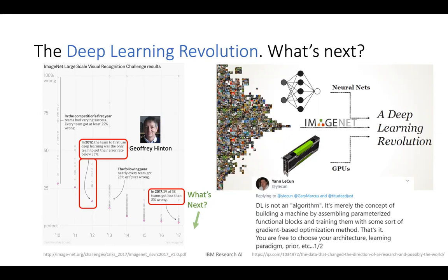AI pioneers like Yann LeCun now describe deep learning as a system rather than just an algorithm. He says deep learning is the concept of building a machine by assembling parameterized function blocks and training them with gradient-based optimization methods. You are free to choose your architecture and learning paradigms. We are basically creating a learning system rather than a specific algorithm.